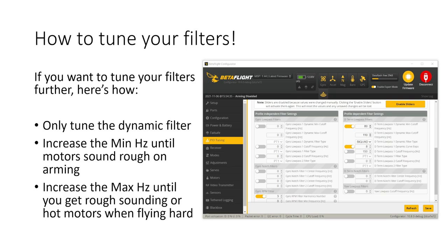Firstly only tune the dynamic filter on D term. You're going to want to increase the min cutoff frequency here until the motors sound rough on arming. And then you're going to want to go down by about 5 hertz. So if they became rough sounding at let's say 90 hertz you're going to want to go down to 85. Then you're going to want to increase the max hertz until you get rough sounding or hot motors when you're flying really hard. So let's say that you get rough sounding or hot motors at a max cutoff of 120. Well then you're going to want to back off by about 5 hertz. So your setting would be 115 hertz. And then you're done. And that's the same for the karate tune or the AOS tune. You're going to be tuning this D term dynamic low pass in that way. And that's all there is to getting an amazing filter tune on Betaflight 4.3.